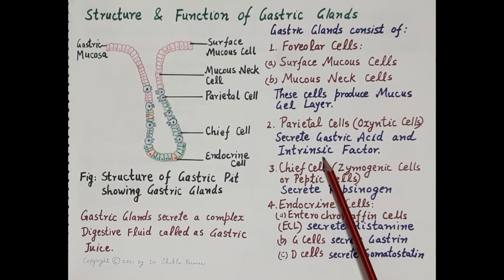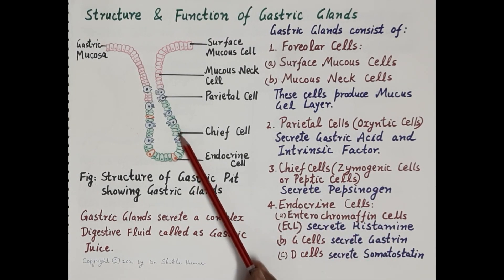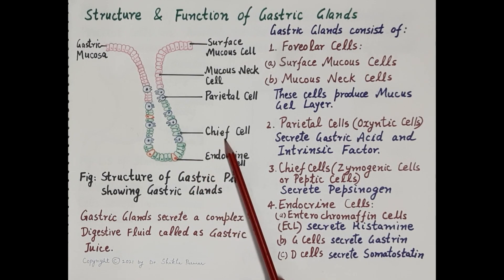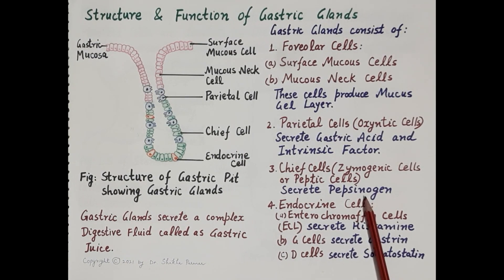Intrinsic factor is required for the absorption of vitamin B12. Another very important cell type is the chief cell, also called zymogenic or peptic cells, shown in green. These are located toward the base of the gastric glands and produce pepsinogen, which is activated by hydrochloric acid (gastric acid) to form pepsin — a proteolytic enzyme that digests proteins.